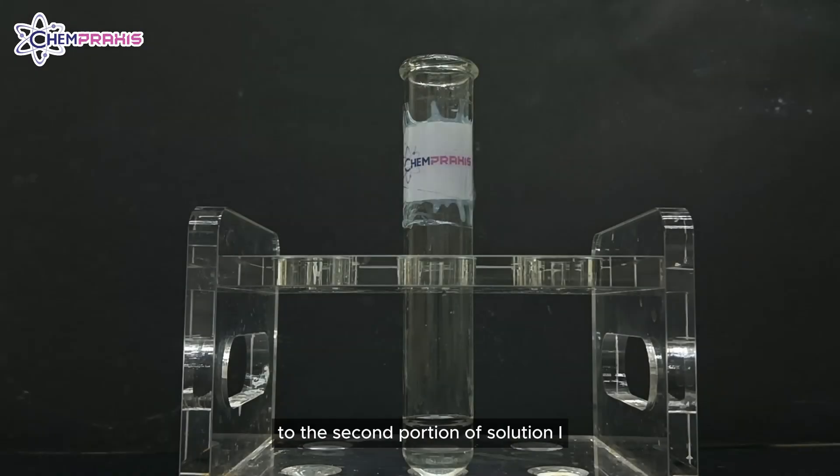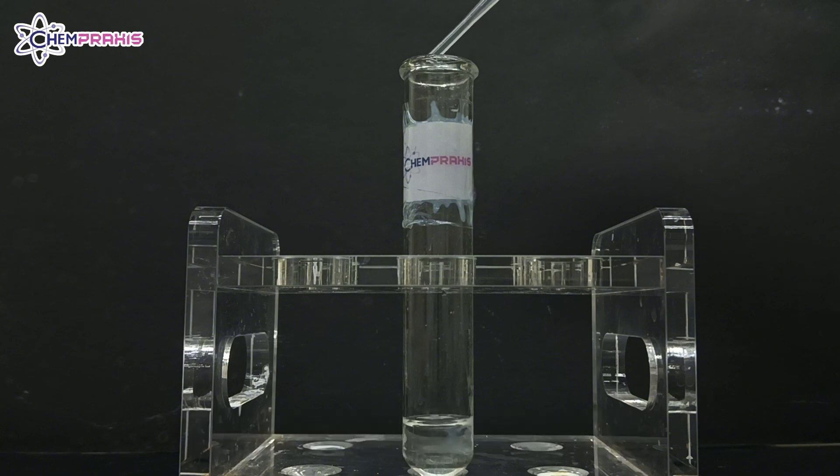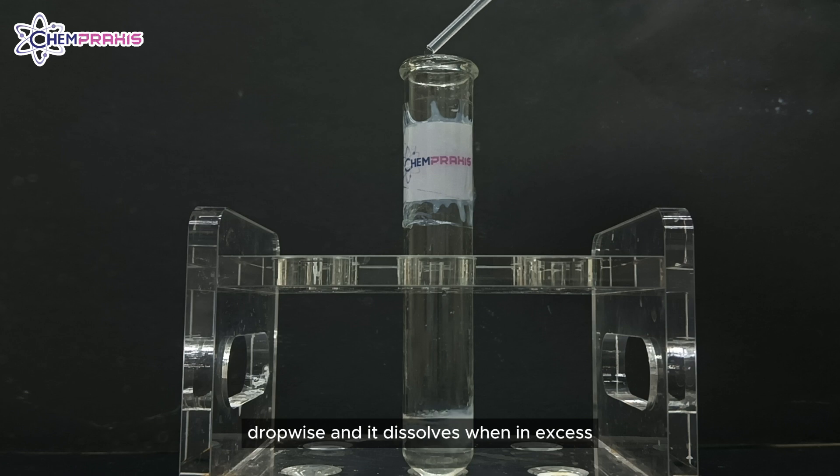To the second portion of solution I, add aqueous sodium hydroxide dropwise and then in excess. We can see that white precipitate is formed when aqueous sodium hydroxide is added dropwise and it dissolves when in excess.